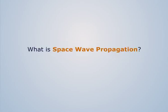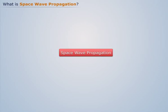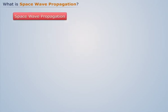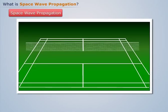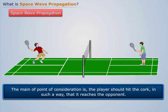What is space wave propagation? To understand space wave propagation, let's take an example of a badminton game. This game consists of players who stand facing each other where one player hits a smash and the cork reaches the opponent. The main point of consideration is the player should hit the cork in such a way that it reaches the opponent.